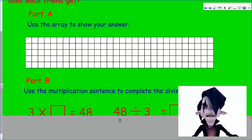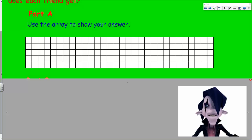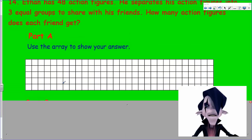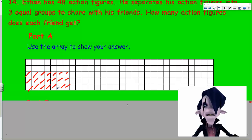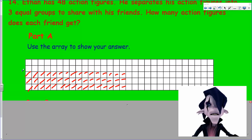It says use the array to show your answer. We have three equal groups, so this could be my three groups here, and then I have 48 altogether. I could take this three and then come across. How am I going to know I get to 48? I could try different things. 3, 6, 9, 12, 15, 18, 21, 24, 27, 30, 33, 36, 39, and we have 42, 45, 48. All I did was count by threes, that was a strategy I used.